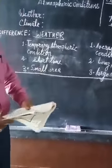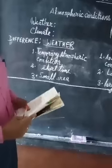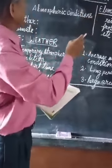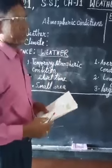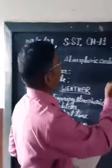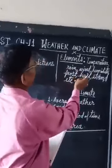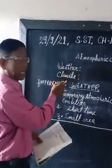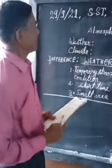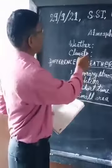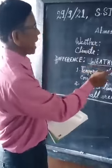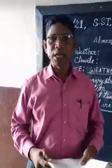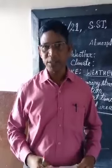I think you understood about these things. Today we studied about weather and climate, which is part of the atmospheric function. Its elements are temperature, rain, humidity, frost, and storm. Weather is temporary, climate is for a long time, and climate is the average of the weather. You understood the difference between weather and climate — thank you, students. Next day we will study about the factors of climate. Thank you.